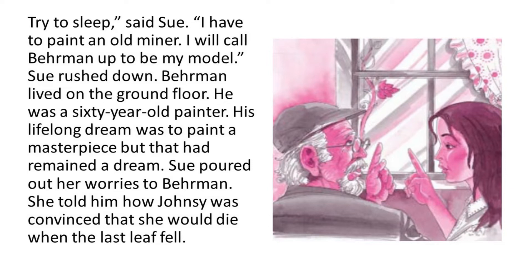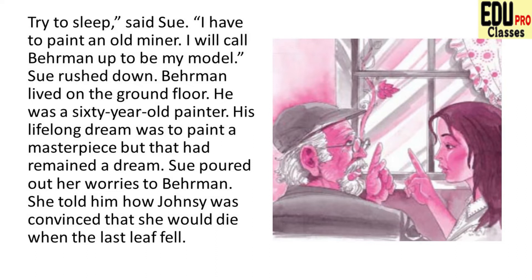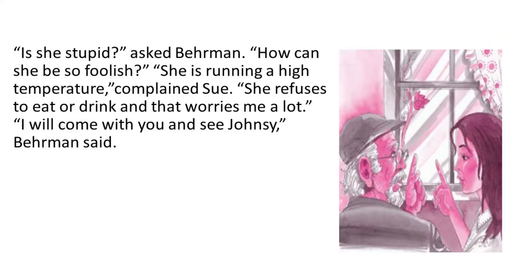Sue poured out her worries to Behrman, an old painter whose dream was to paint a masterpiece, though it had never been fulfilled. She told him how Johnsy was convinced that she would die when the last leaf fell. 'Is she stupid?' asked Behrman. 'How can she be so foolish?'